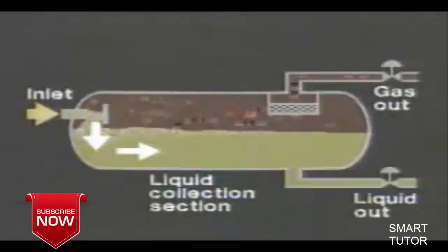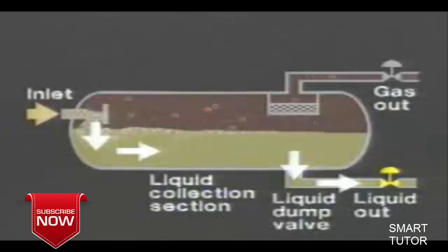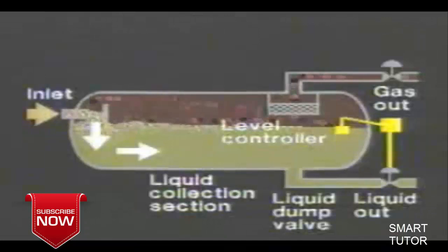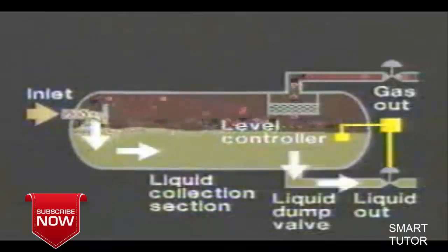The separated liquid then leaves the vessel through the liquid dump valve, which is regulated by a level controller. The level controller senses changes in liquid level and controls the dump valve accordingly.